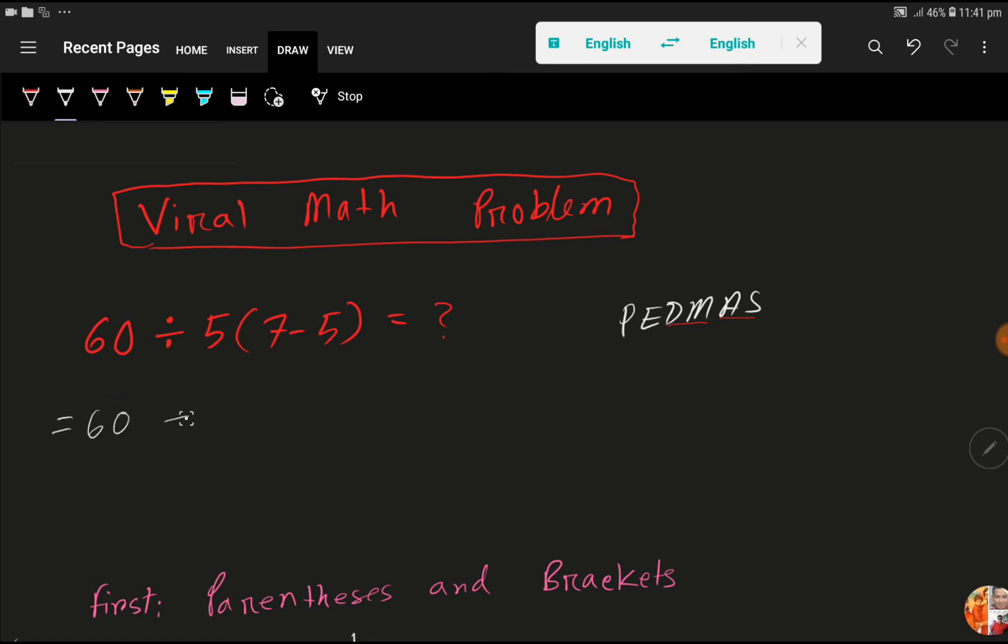So we have to work in this group. So 7 minus 5, that gives us 2, right? 2, look.